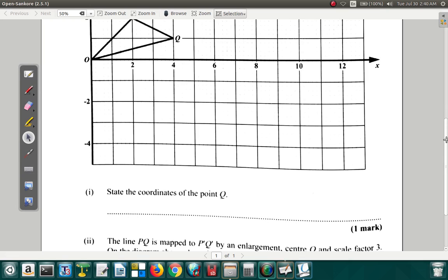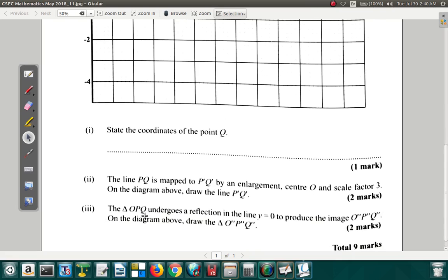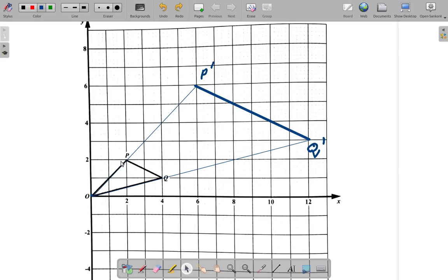Now, let's look at the third part of this question. Triangle OPQ undergoes a reflection in the line Y equals 0. You know what a line Y equals 0 is, it's the X axis. It does that to produce OPQ, all double primes. On the diagram above, draw the triangle OPQ, all double primes.